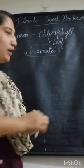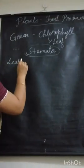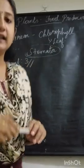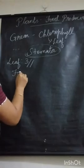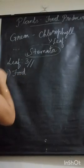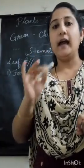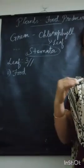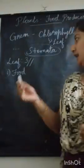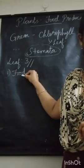Your leaf has three main functions. The first function is for preparing food. It prepares food with the help of chlorophyll, in the presence of sunlight, water, and carbon dioxide — we will be learning about this in detail. So the first function of a leaf is for preparing food.